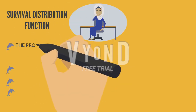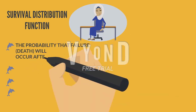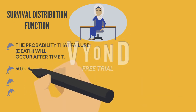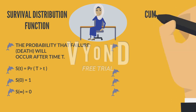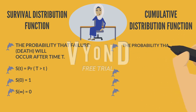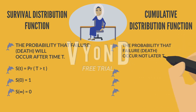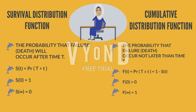The survival distribution function is the probability that failure will occur after time t. S at time zero is equal to one, and S at infinity is equal to zero. For the cumulative distribution function, it is the probability that failure occurs not later than time t. F at time zero is equal to zero, and F at infinity is equal to one.